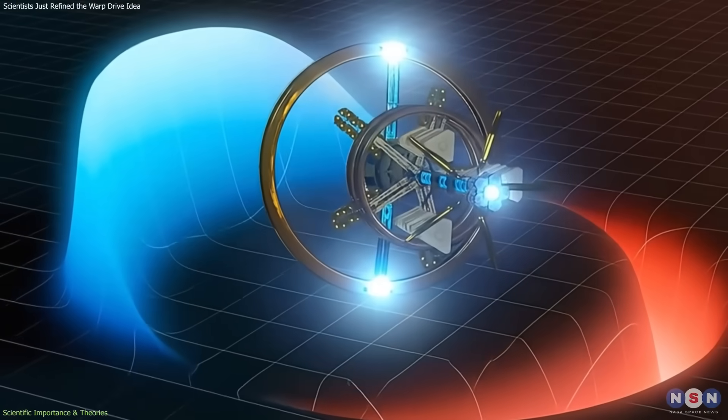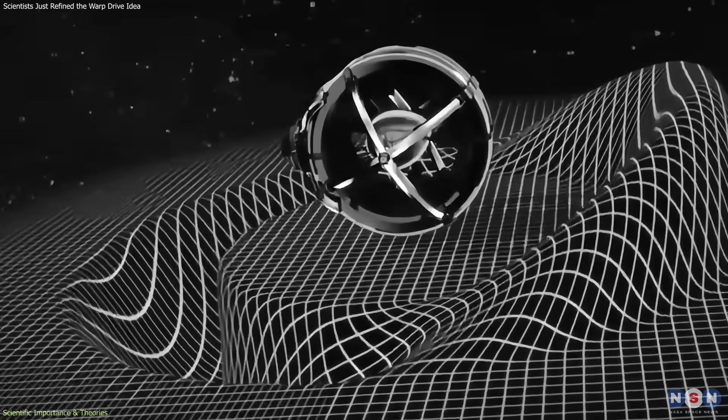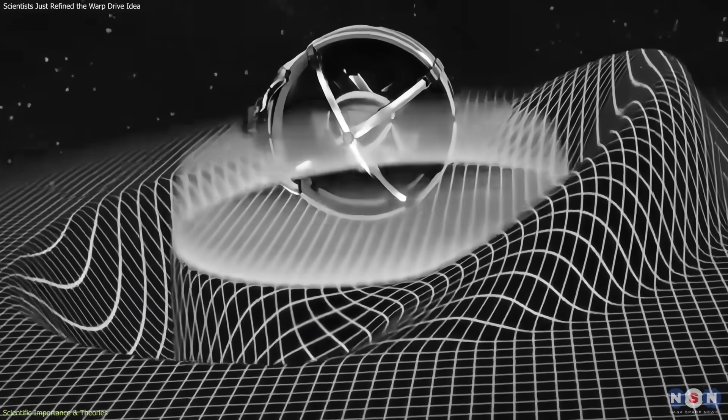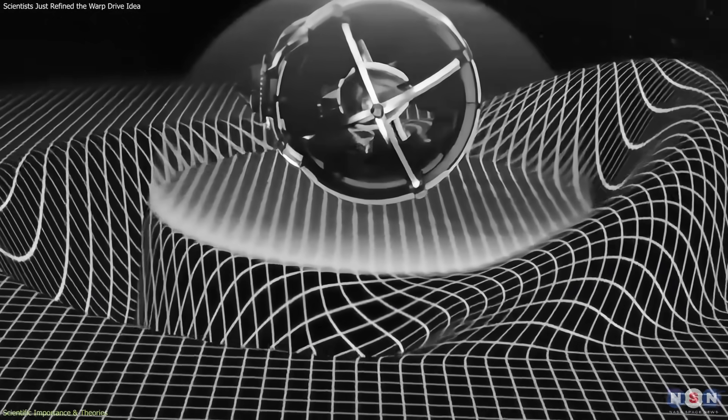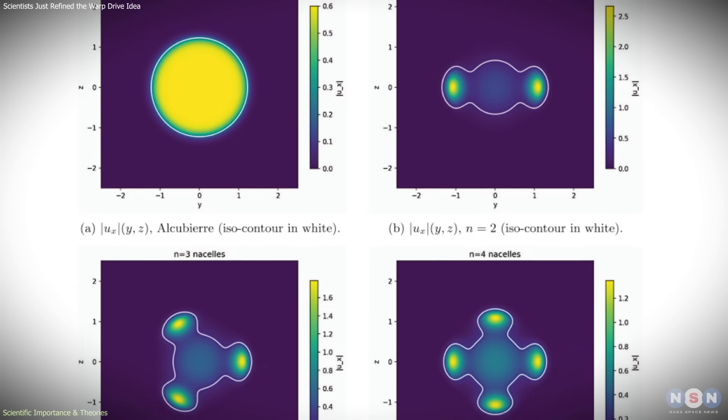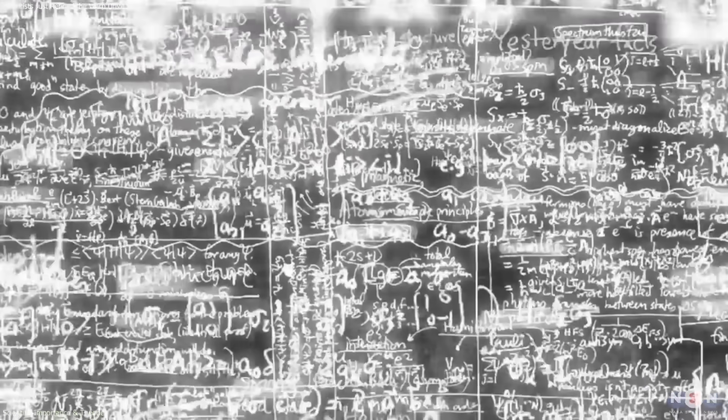For decades, discussion of warp travel focused almost exclusively on the Alcubierre bubble. This created the impression that warp motion required a single, massive spacetime distortion surrounding a spacecraft. The new study challenges that assumption by showing that similar effects can be achieved using separated spacetime regions.